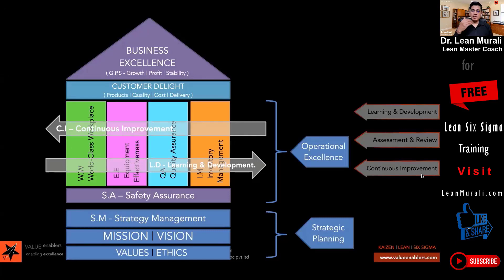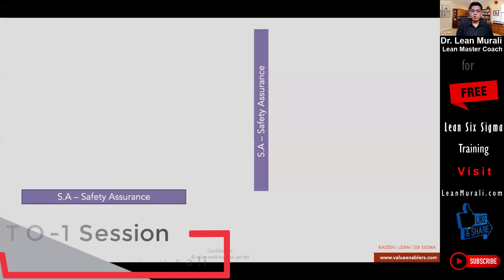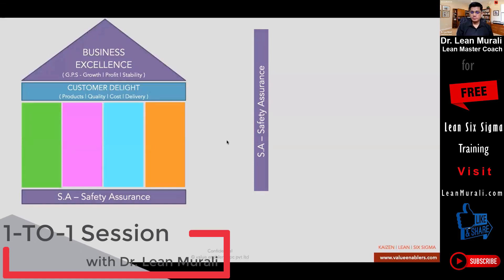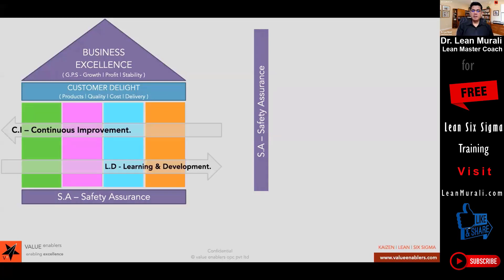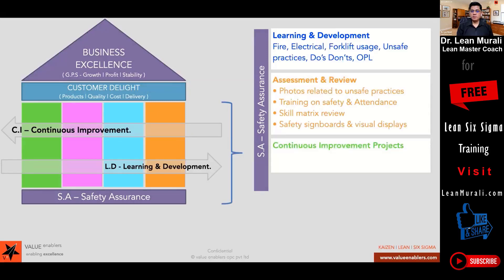We will break down learning and development, assessment and review, and continuous improvement in further slides. Let's talk about safety assurance. If we have to apply these three components to safety, they are: learning and development, assessment and review, and continuous improvement projects.